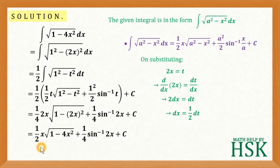My final answer would be 1 by 2x into square root of 1 minus 4x square plus 1 by 4 sin inverse of 2x plus c which is my required answer.